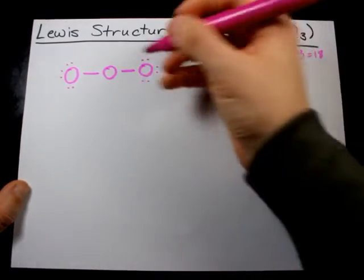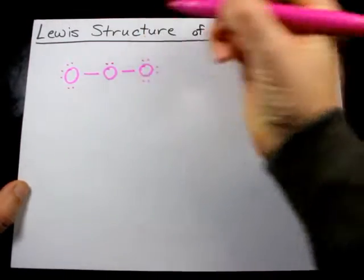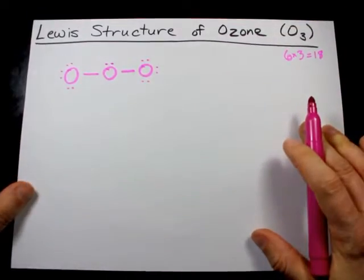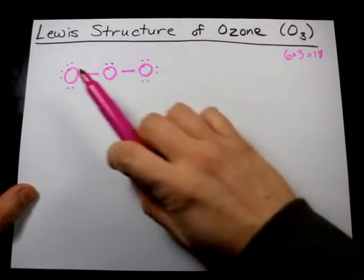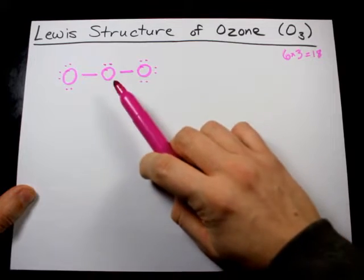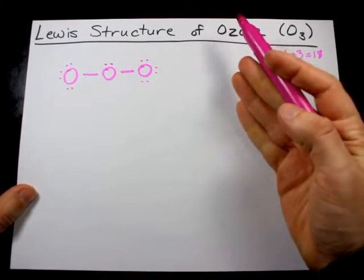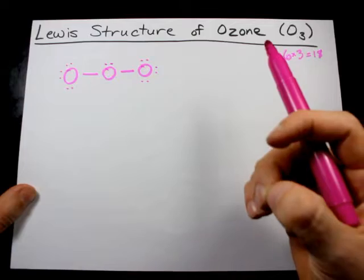I need 18, and so I'm going to dump the extra two electrons on the central oxygen atom. Now, I've used up all the valence electrons, but the middle oxygen does not have a complete octet. That violates the octet rule.